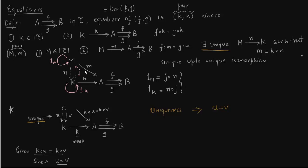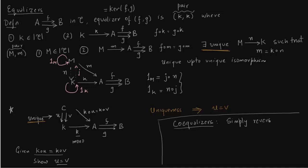Now we want to talk about co-equalizers. For a co-equalizer you do nothing except reverse the arrows, and what you get is a co-equalizer. Equalizers are really important — we use them to define sheaves, which will come up later. Reversing arrows, we call this the co-kernel of (f, g).